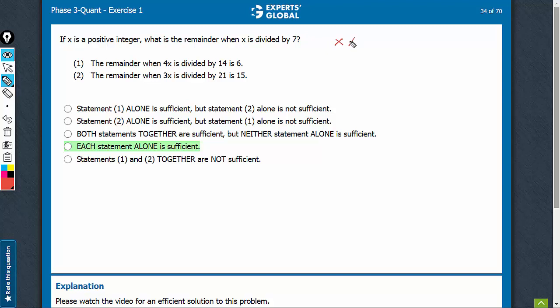The question is, what is the remainder when x is divided by 7? Look at statement 1 here. This means 4x is equal to 14m plus 6, where m is a positive integer. Divide the entire equation by 2, you get 2x is equal to 7m plus 3. 2x is leaving a remainder of 3.